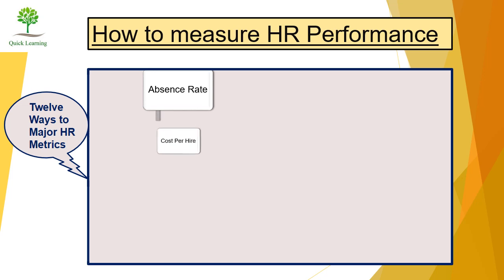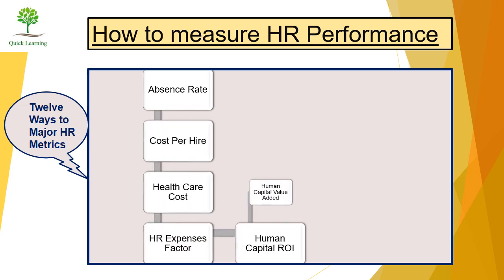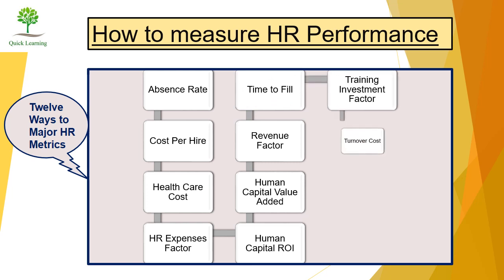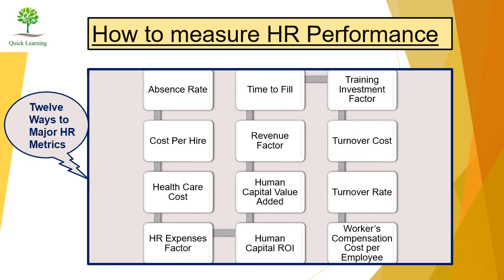How will we measure HR performance? There are 12 ways to measure HR performance: 1. Absence rate, 2. Cost per hire, 3. Health care cost, 4. HR expenses factor, 5. Human capital return on investment, 6. Human capital value added, 7. Revenue factor, 8. Time to fill, 9. Training investment factor, 10. Turnover cost, 11. Turnover rate, 12. Worker's compensation cost per employee.